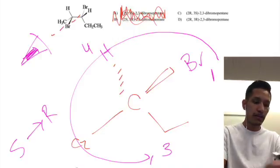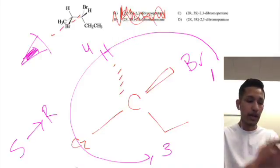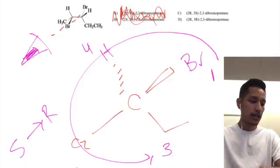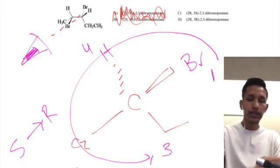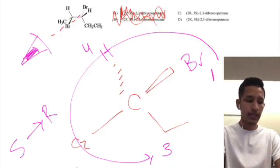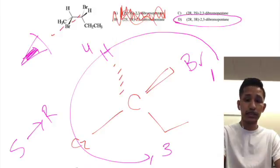So now from our last result we've got C2 as R, and now we have C3 as R as well. That gives us 2R,3R-dibromopentane, so the answer would be D.